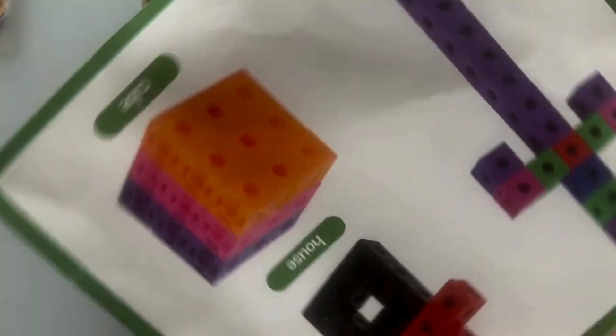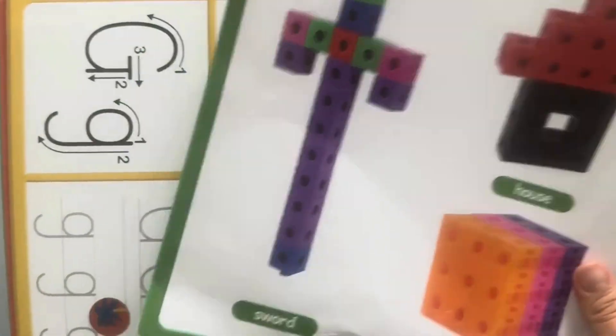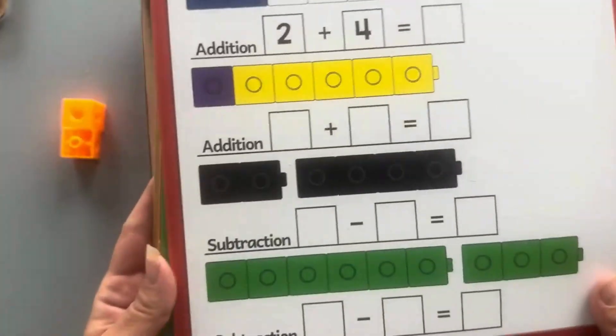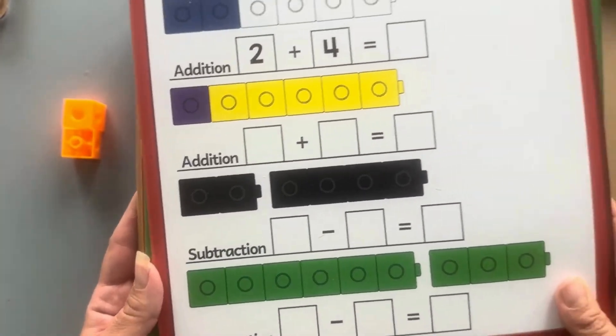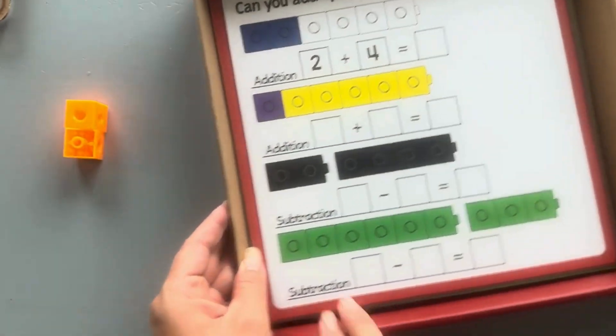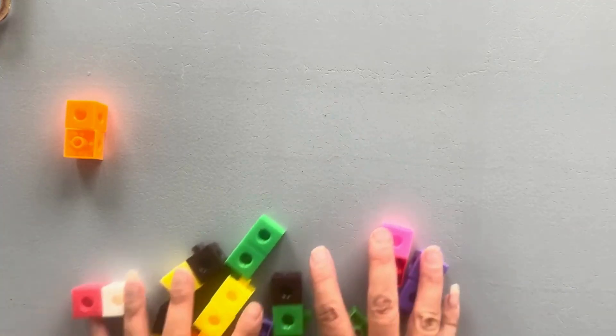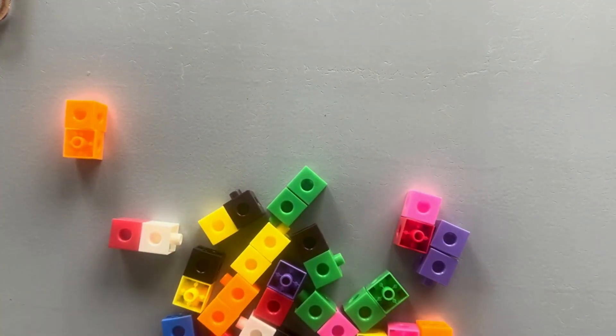And it looks like it comes with these fun cards. Ours is kind of crinkly because we've had it for a minute. But this is how you use the cubes. You can learn math, letters and spelling. But today what we're going to do is we are going to count all of these cubes by twos so that we can see how many cubes came in the box.